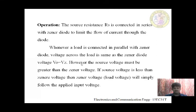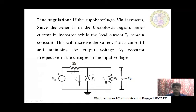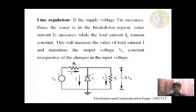Now we are dealing with line regulation. We already discussed what line regulation means in the regulator concept, but here we will understand how the Zener diode is used for line regulation. Line regulation means the output remains constant even with changes in the line voltage (input voltage) — the output remains constant. That is called line regulation.